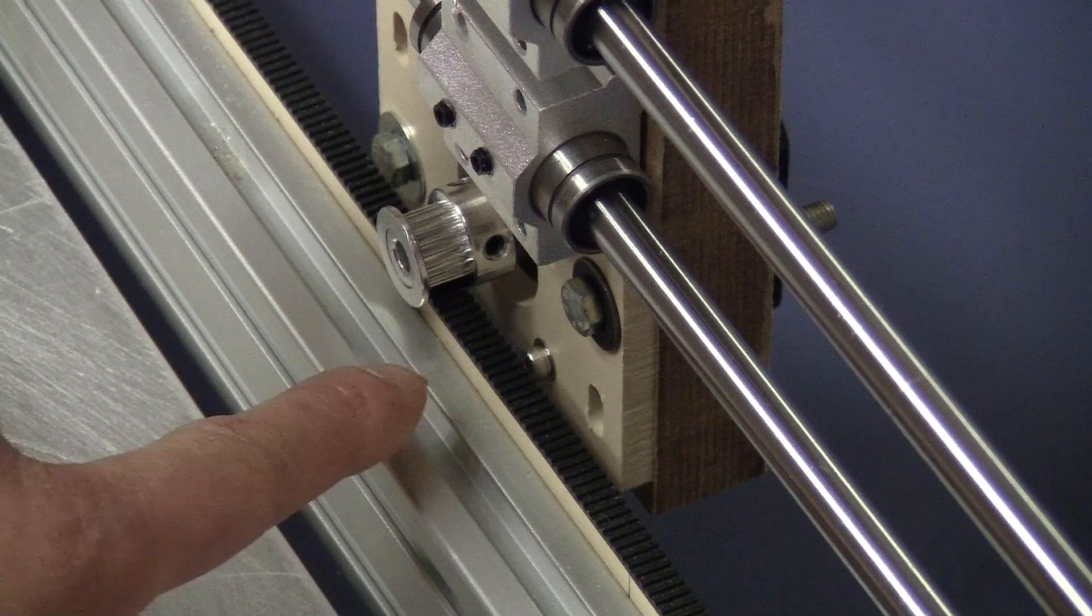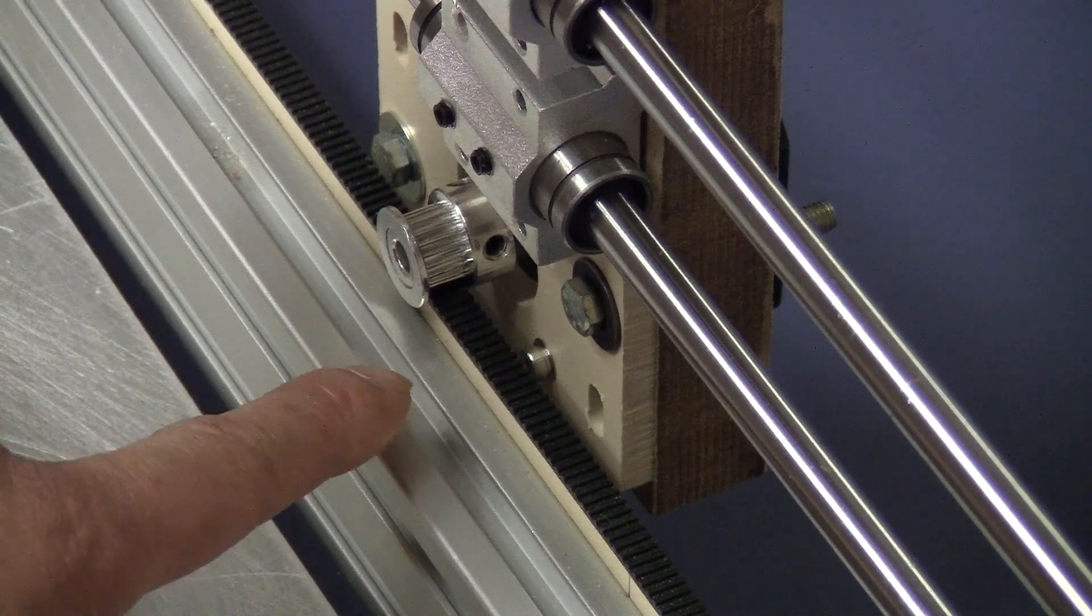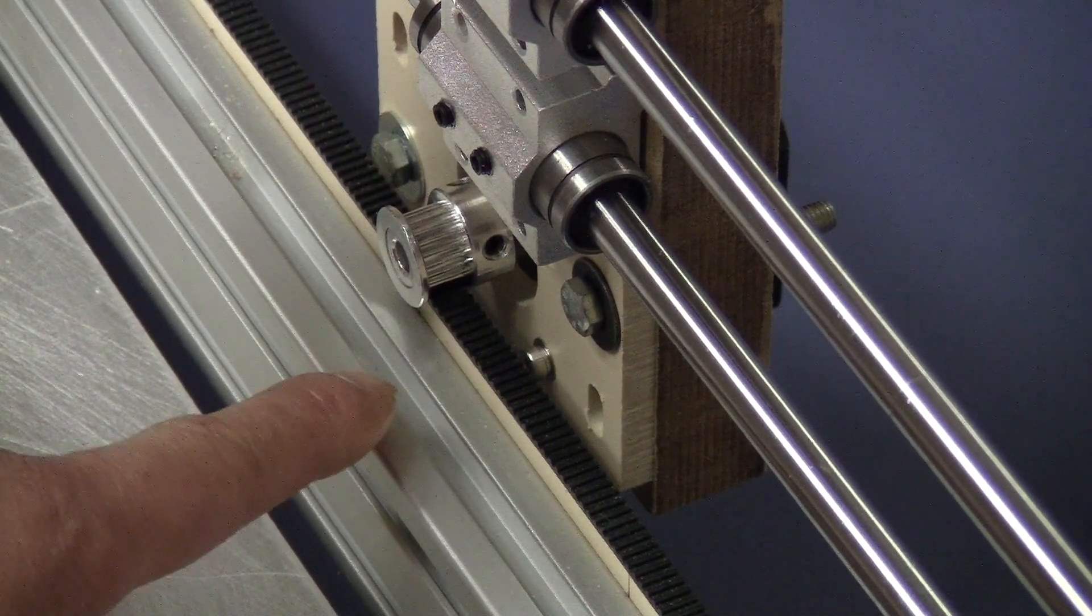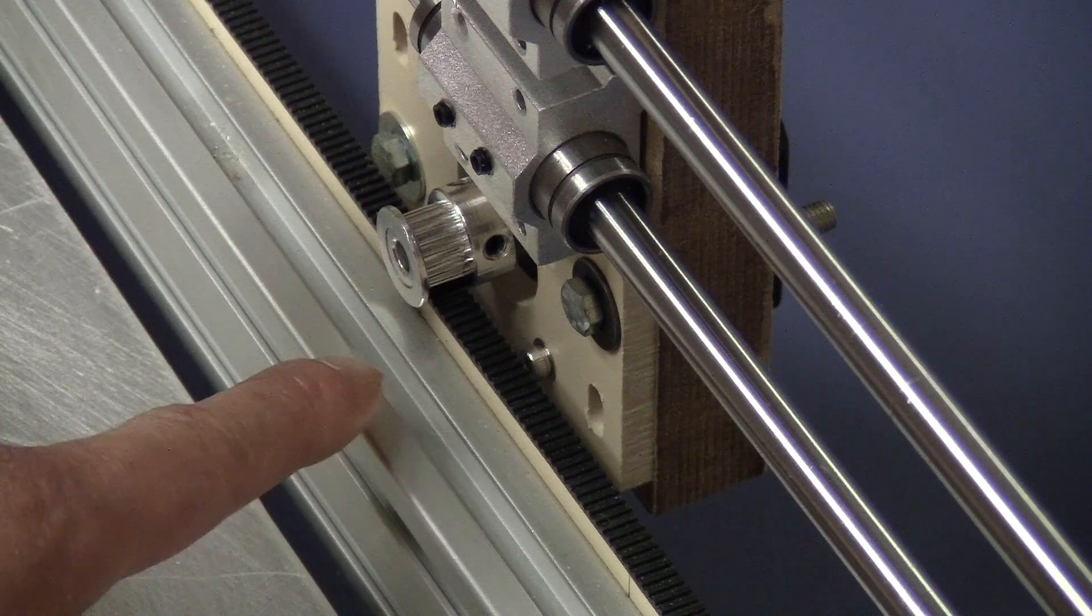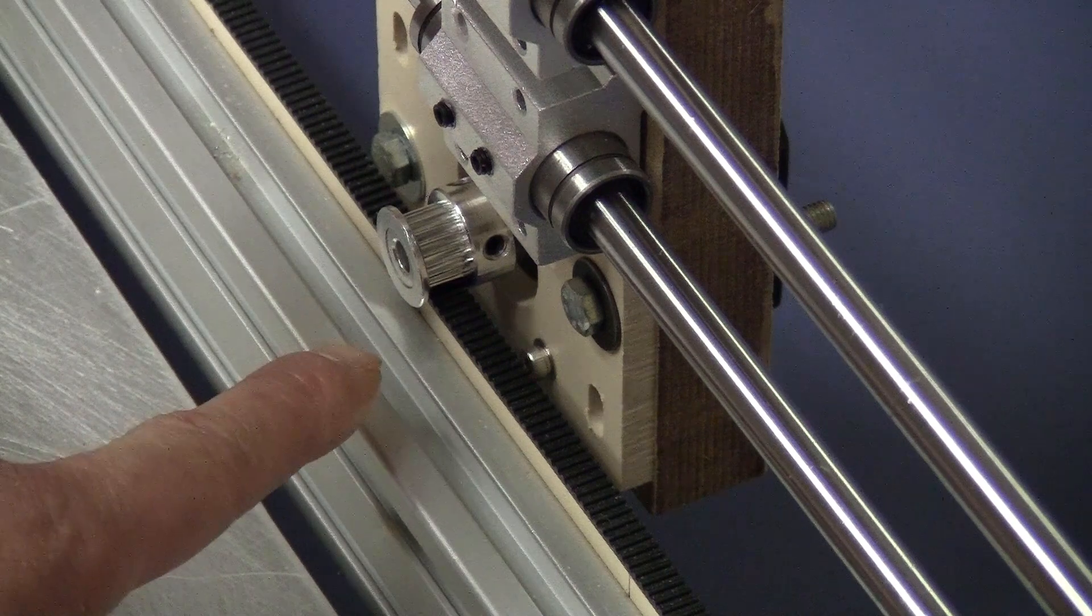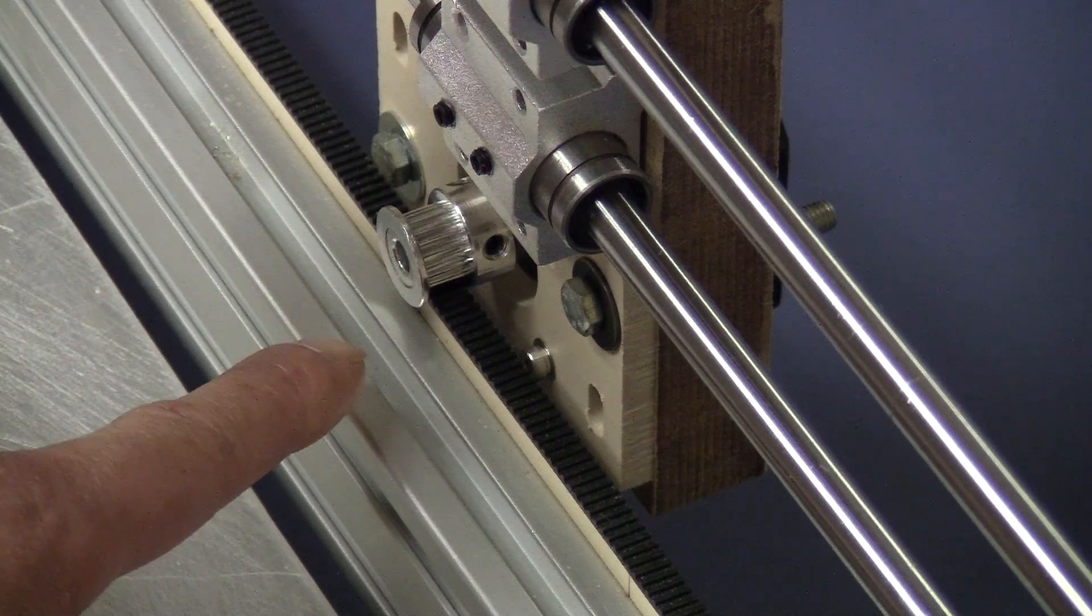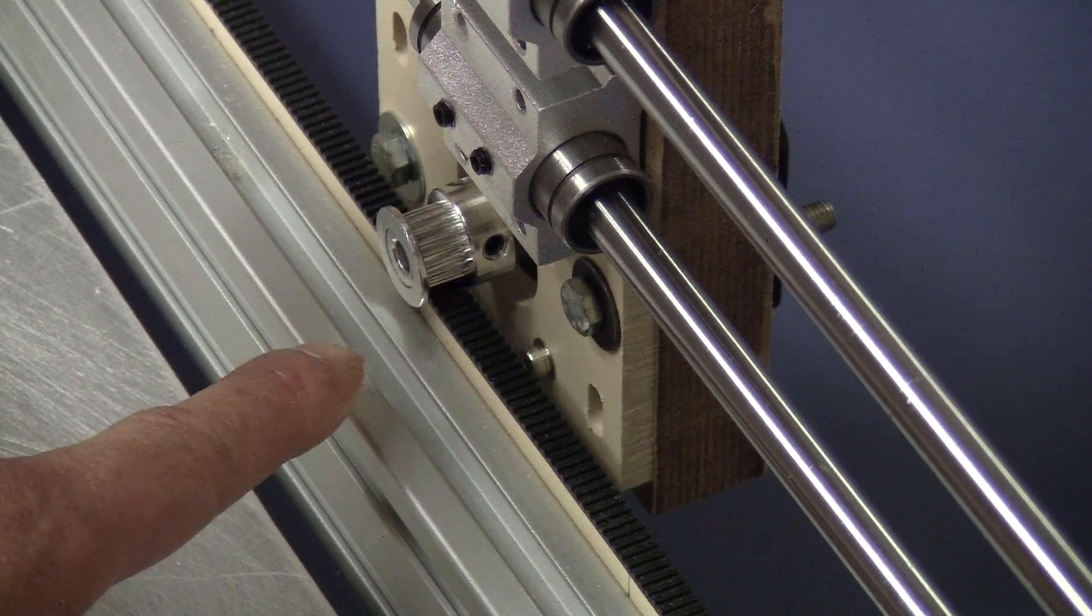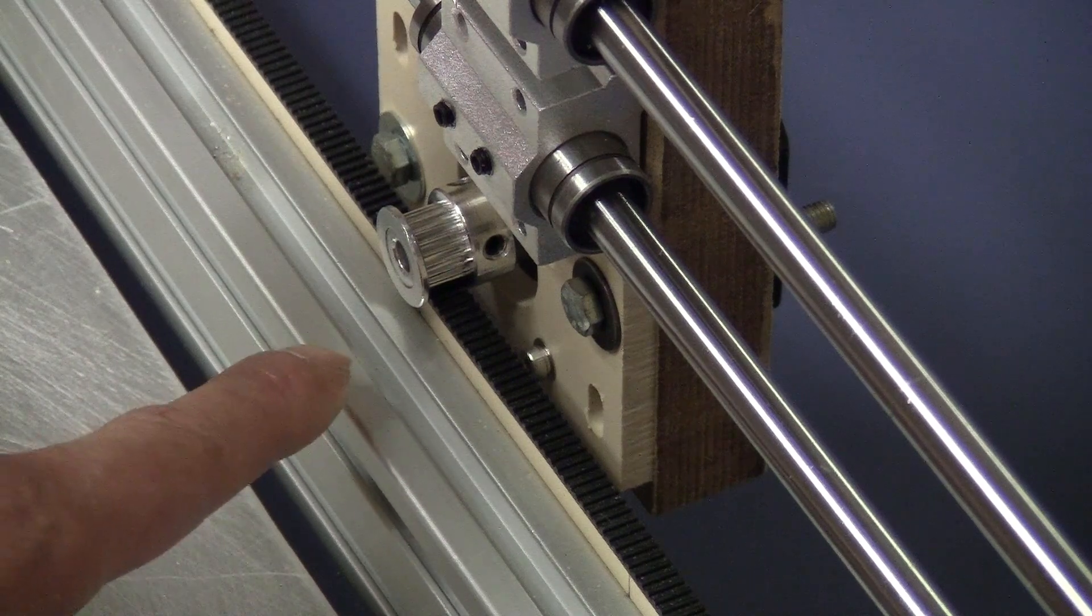So that's where the axis moves a bit slower. So the laser burns a bit more, creates a darker line. And when the teeth are engaged, it pushes a bit faster. So the laser burns a bit less and creates a lighter line. That's where you see all kind of vertical lines in my image.